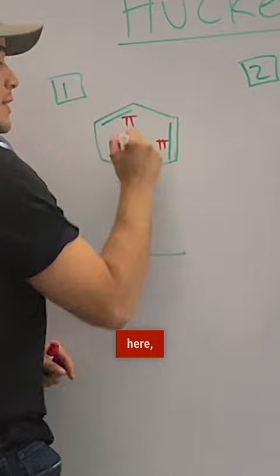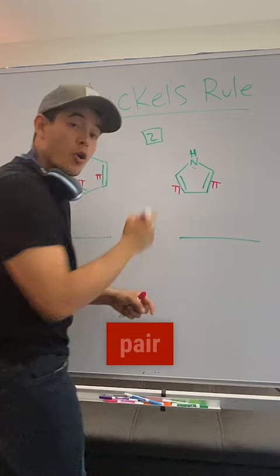So there's a pi bond here, pi bond here, pi bond here. Same thing over here. This is a conjugated species because of the lone pair that's present there.